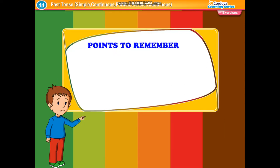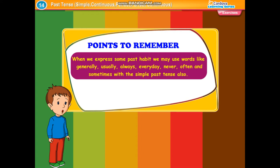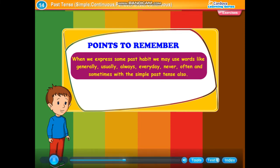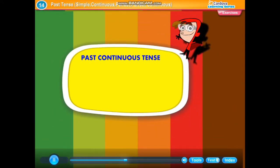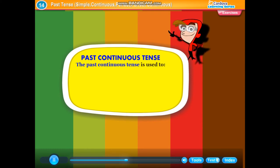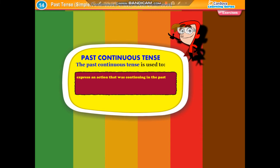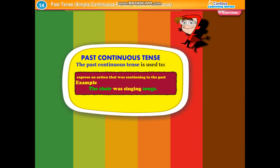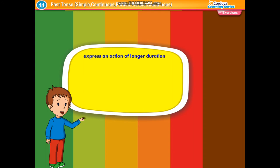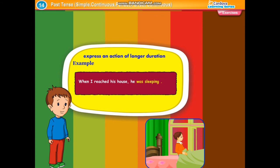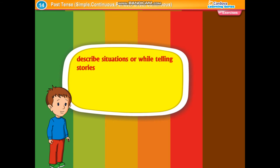Points to remember: When we express some past habit, we may use words like generally, usually, always, every day, never, often, and sometimes with the simple past tense. Past continuous tense: The past continuous tense is used to express an action that was continuing in the past. Example: The choir was singing songs. It also expresses an action of longer duration. Example: When I reached his house, he was sleeping. It is used to describe situations or while telling stories.